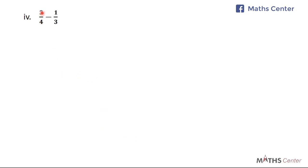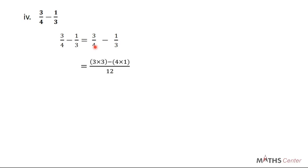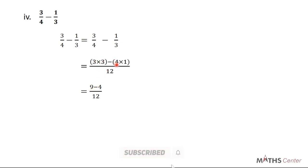Now we have 3 over 4 minus 1 over 3. So you find the LCM of 4 and 3, which is 12. 12 divided by 4 gives 3, multiply by numerator 3, so 3 times 3. Then minus: 12 divided by 3 gives 4, times the numerator 1, so 4 times 1. We know 3 times 3 gives 9, minus 4 times 1 gives 4. So 9 minus 4 is 5 divided by 12. This is a proper fraction, so we leave our answer as 5 over 12.